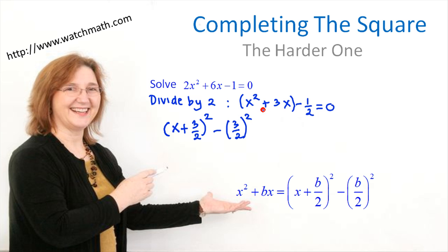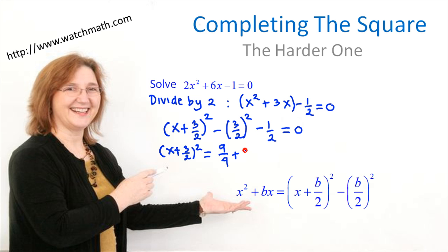This difference of squares replaces x squared plus 3x, but we still have the negative 1 half equal to 0. So now we can simplify: x plus 3/2 squared, then moving the remaining terms to the other side, we get 9/4 plus 1/2. We can combine 9/4 and 1/2 into 11/4.